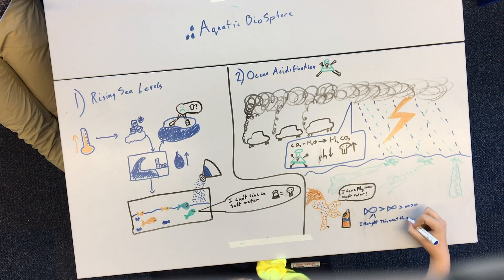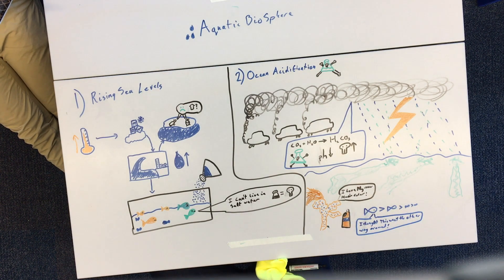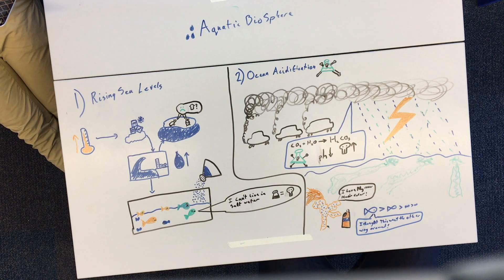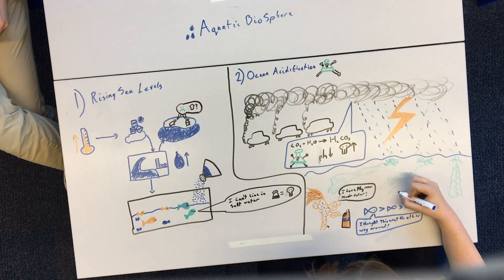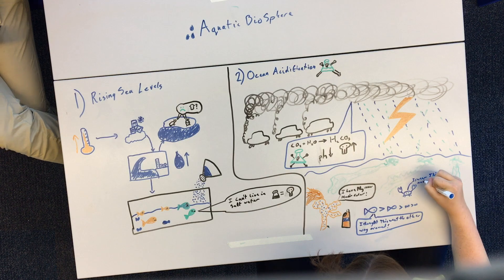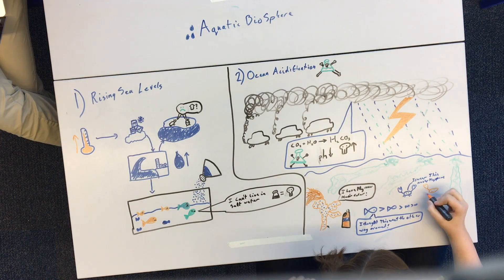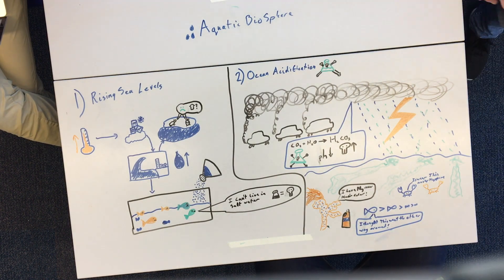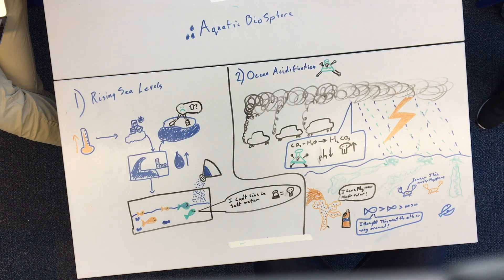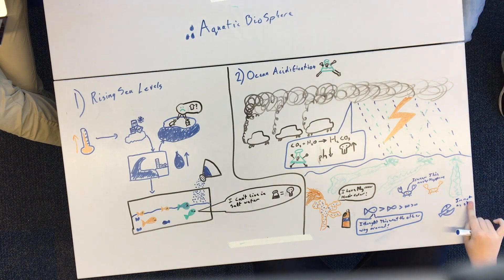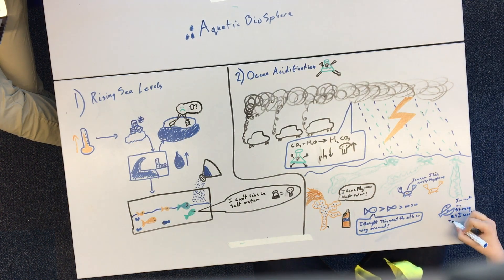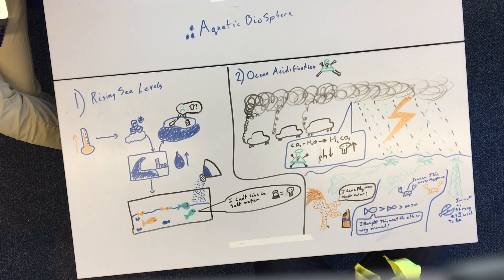Moreover, ocean acidification causes a reduction in reproduction, growth, and development of many marine organisms. This is going to make it more difficult for organisms to survive. And last but not least, acidification reduces the ability of marine organisms like crabs to form calcium carbonate shells or skeletal features, as they rely on the basic nature of the ocean to do so.